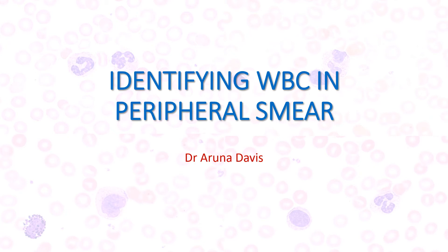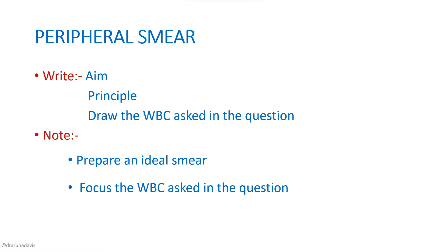In this video we are going to discuss peripheral smear. This question can be asked as a long hematology question wherein you will be asked to prepare an ideal smear as well as focus the WBC. You have to write the aim, the principle, as well as draw the WBC which has been asked. We will discuss how to identify the different WBCs present in the peripheral smear.